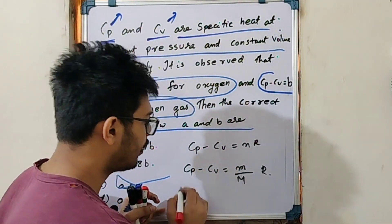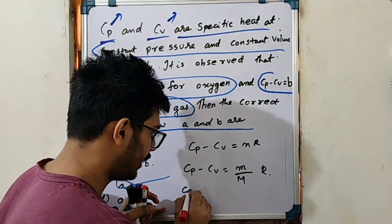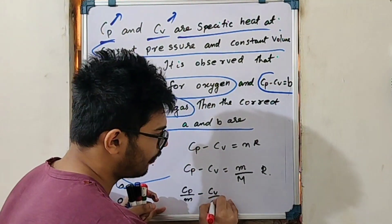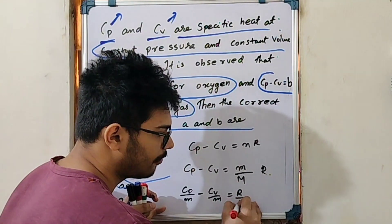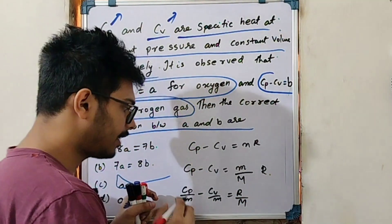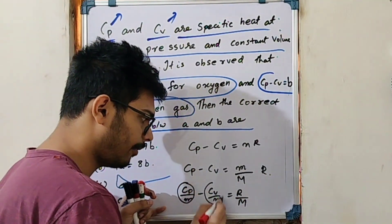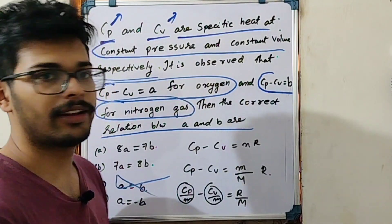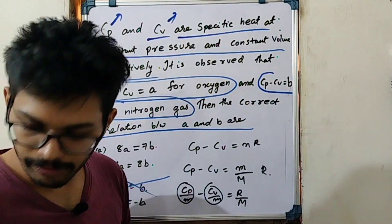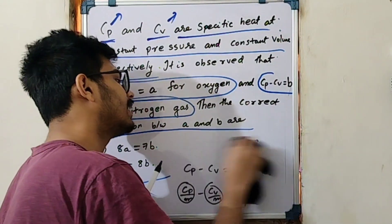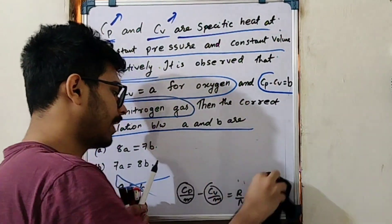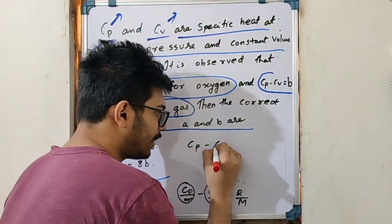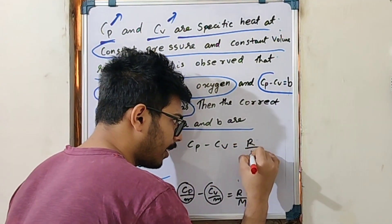Dividing through by mass M: CP divided by M minus CV divided by M equals R divided by molecular mass. CP over M is the specific heat capacity per unit mass. By definition, specific CP minus specific CV equals R divided by M.